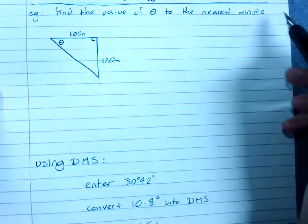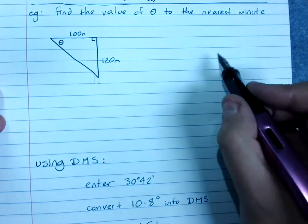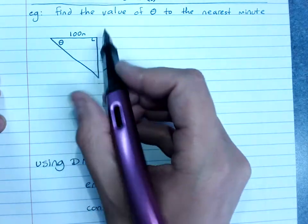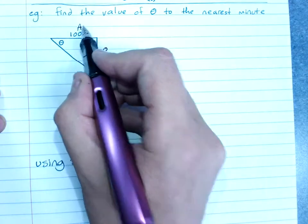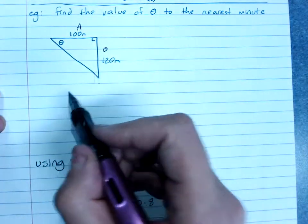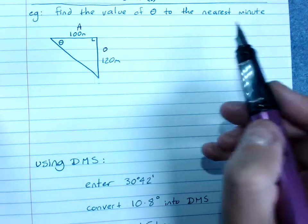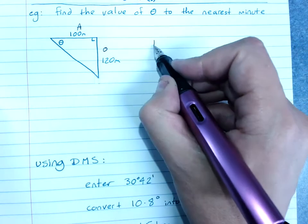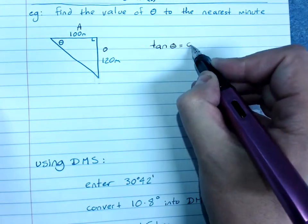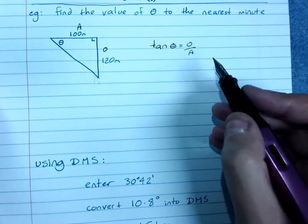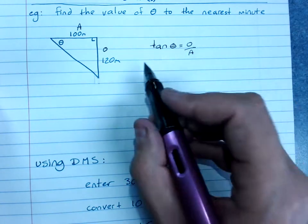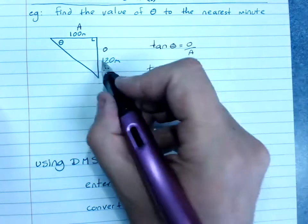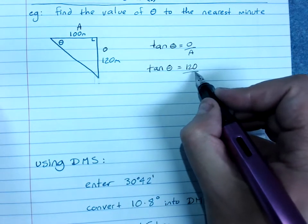Find the value of theta to the nearest minute. The steps are still the same. Label the sides, only the ones that we've got anything on. Opposite and adjacent, nothing on the hypotenuse. Choose and write your ratio in full. Because I have opposite and adjacent, I'll use tan of the angle is opposite over adjacent. Substitute in your values. Tan of the angle is 120 over 100.